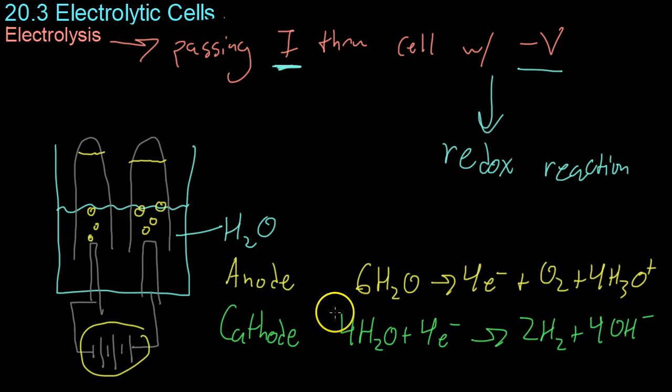So you're taking energy from these batteries and forcing a non-spontaneous reaction to occur through electrolysis. And if you look at the two half processes, you'll notice that at the anode you're forming the oxygen, whereas at the cathode you're forming the hydrogen.